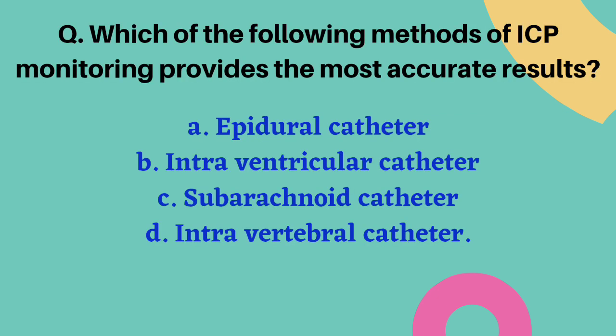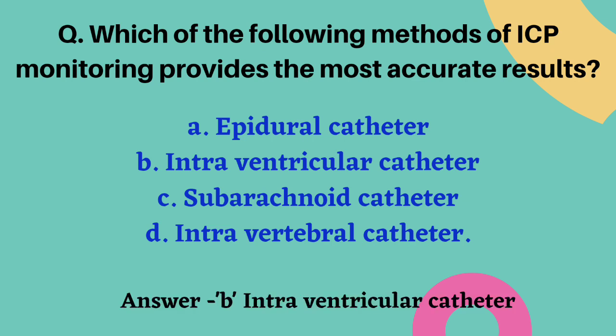Which method of ICP monitoring provides the most accurate results? Options are epidural catheter, intraventricular catheter, subarachnoid catheter, and intravertebral catheter. The correct answer is option B — intraventricular catheter. This is a direct question.